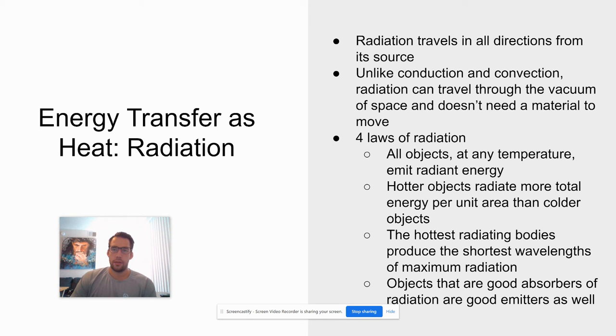Four laws of radiation. These are important. All objects at any temperature are going to emit radiant energy. The sun radiates energy, but so does the Earth. So do we. When we get really warm, we actually radiate thermal energy from our bodies, and the Earth emits thermal energy as well.